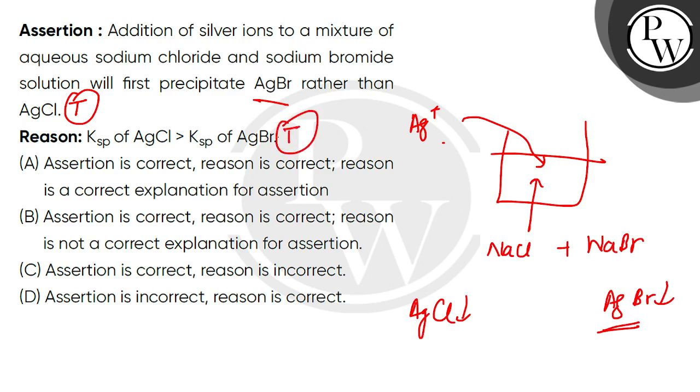If Ksp is less than AgBr, then the solubility product is less than the dissociated form. In the dissociated form, it will become less than the undissociated form. So, it is very true.